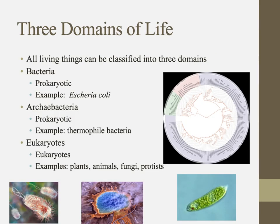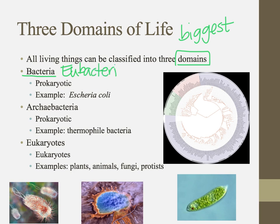One of the newer taxa used for the last couple of decades is something called a domain. A domain is the largest group you can place an organism into. We have three domains. The first is bacteria, sometimes written as eubacteria. These are prokaryotes, like E. coli.